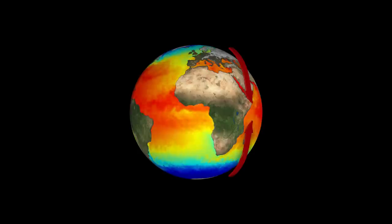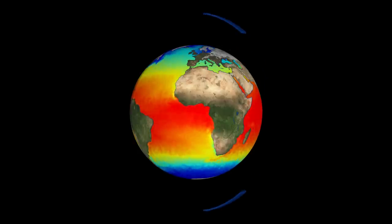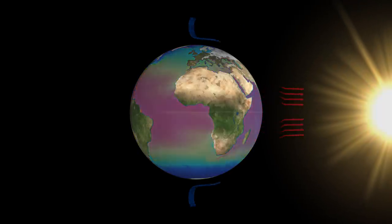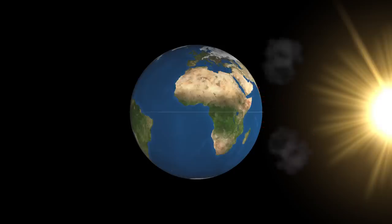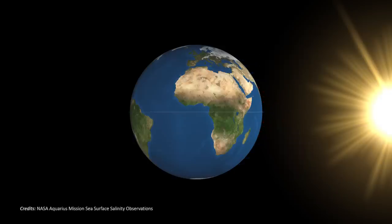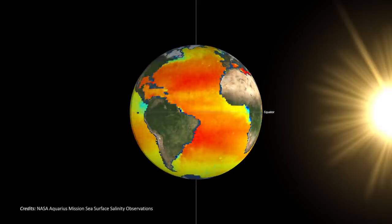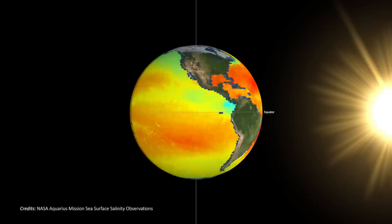On a stationary Earth, the convection cell would extend from the equator to the poles. The latitudinal distribution of heating by solar radiation and its redistribution by the major atmospheric circulation cells leads to distinct zones of evaporation in the tropics and distinct zones of precipitation at the equator and at mid-latitudes. This results in a latitudinal distribution of salinity, with generally saltier water near the equator and fresher water near the poles.